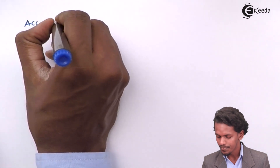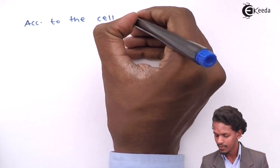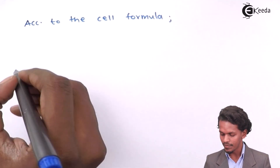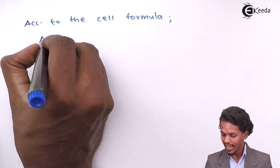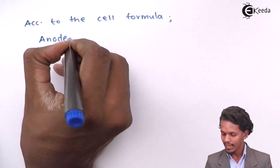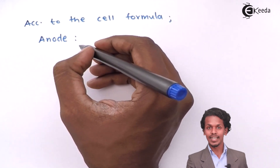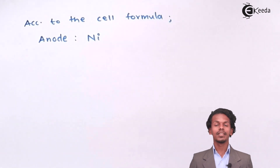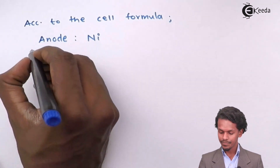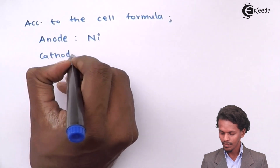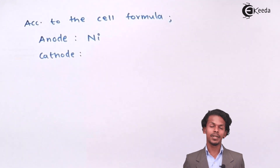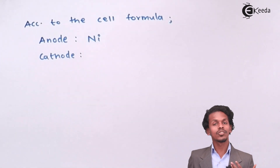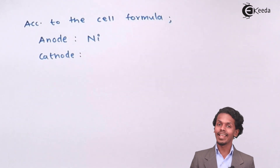According to the cell diagram or cell formula, the anode is the one present on the left-hand side, which is nickel, and the cathode is the one present on the right-hand side.